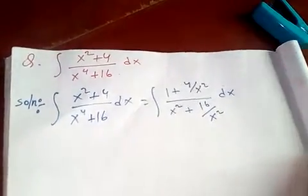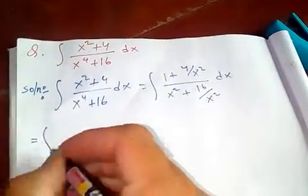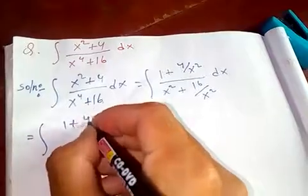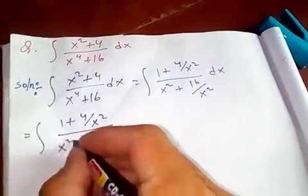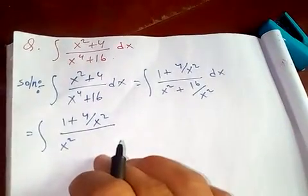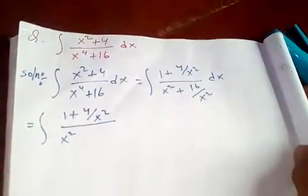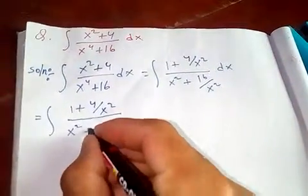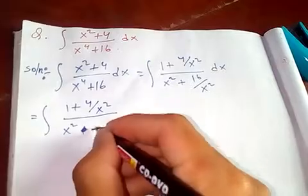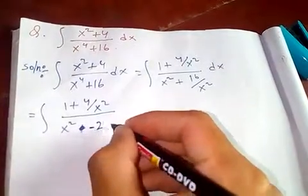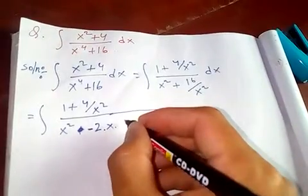Now let's simplify more. We get the integral of (1 + 4/x²) divided by x², let's put it in the form of our special integral again: x² plus — let me take the minus.